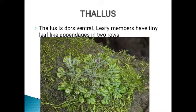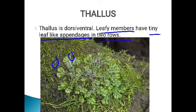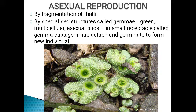Some liverworts have leaf-like structures — these are the leafy members. The leafy members have tiny, very small leaf-like appendages. An appendage means an outgrowth or projection. These leaf-like structures are found in two rows. They are found on the stem-like structure, because liverworts don't have a true stem.